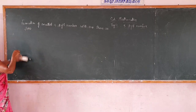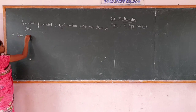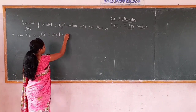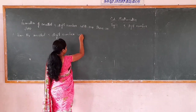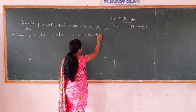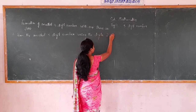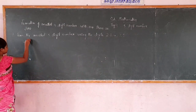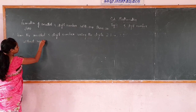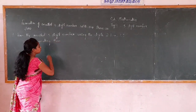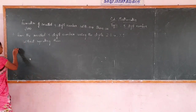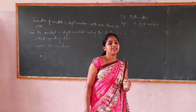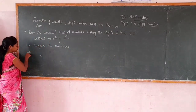Consider an example: form the smallest 5-digit number using the digits 2, 0, 4, 3, 1 without repeating them. We know how to form the smallest 5-digit number. First, we compare the numbers.